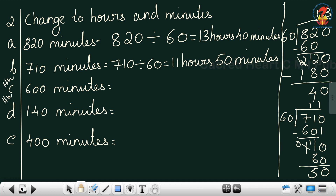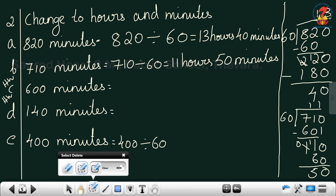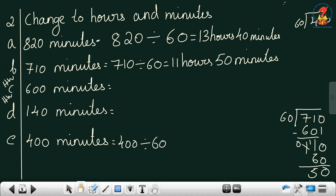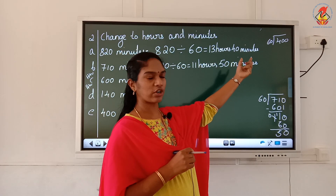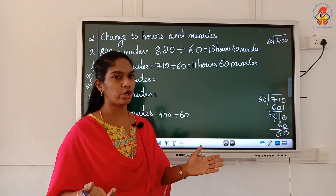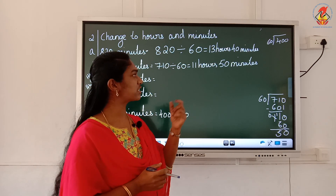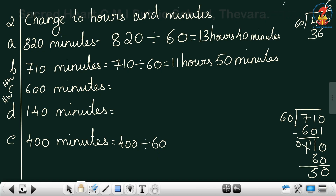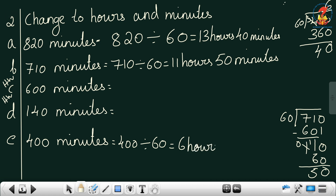C and D you can do as homework. Question E: 400 minutes divided by 60. Starting with 2 digits — 40 is smaller than 60, so I take all three digits: 400. From the 6 times table, find a number less than 40: 6 sixes are 36, so 6 into 60 is 360. Subtract — borrow, this becomes 10, I get 4. The answer is 6 hours and 40 minutes.